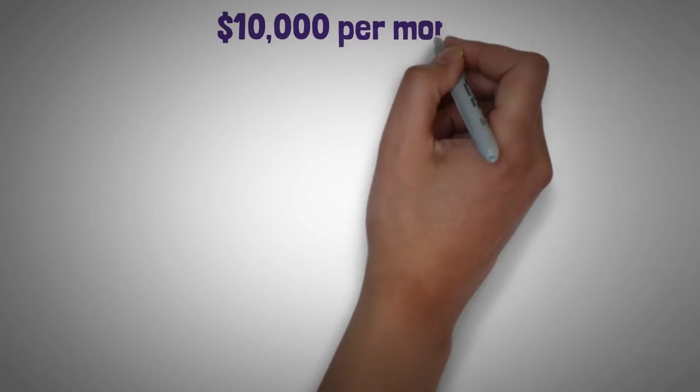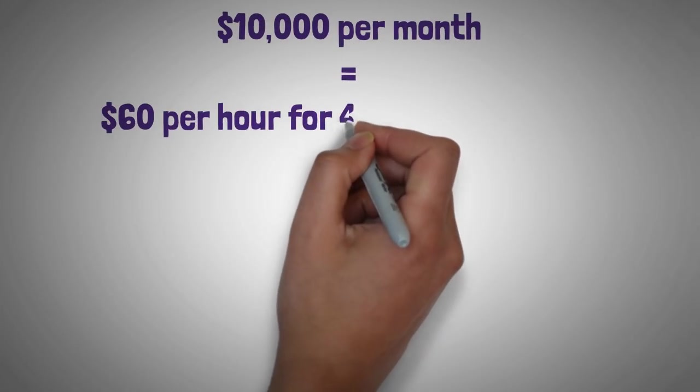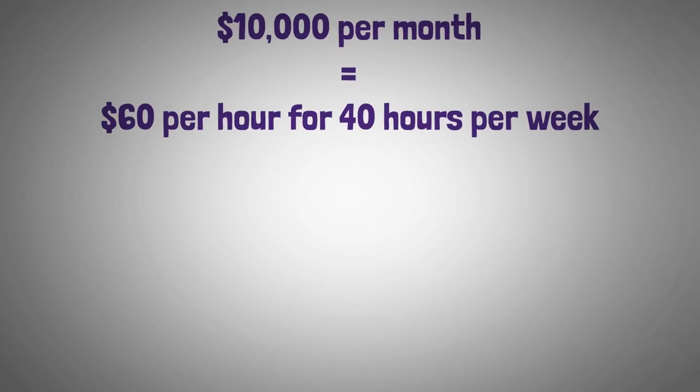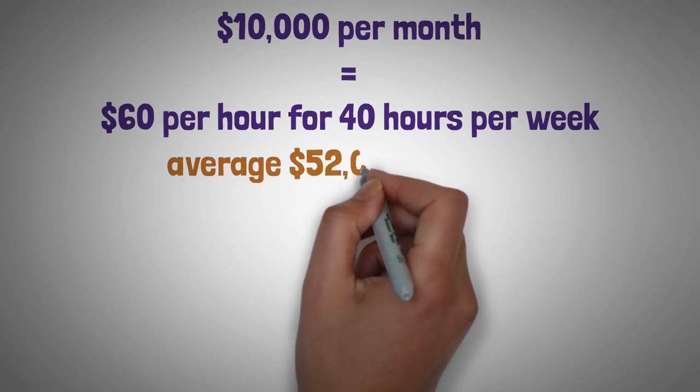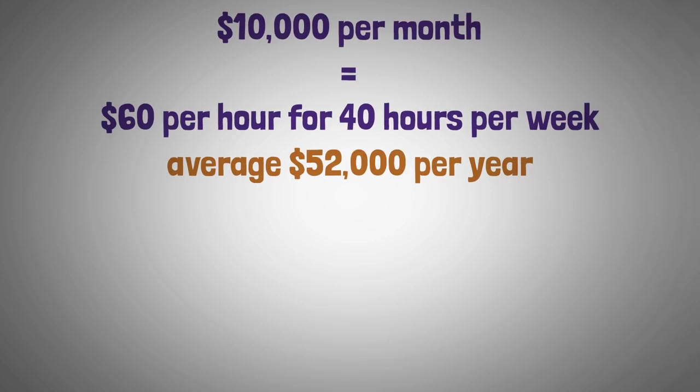Earning $10,000 every month from your investments is the equivalent of earning $60 per hour for 40 hours every single week. That's pretty substantial, considering the median full-time wage or salary worker in the United States in 2021 earned less than $52,000 according to PolicyAdvice.com.